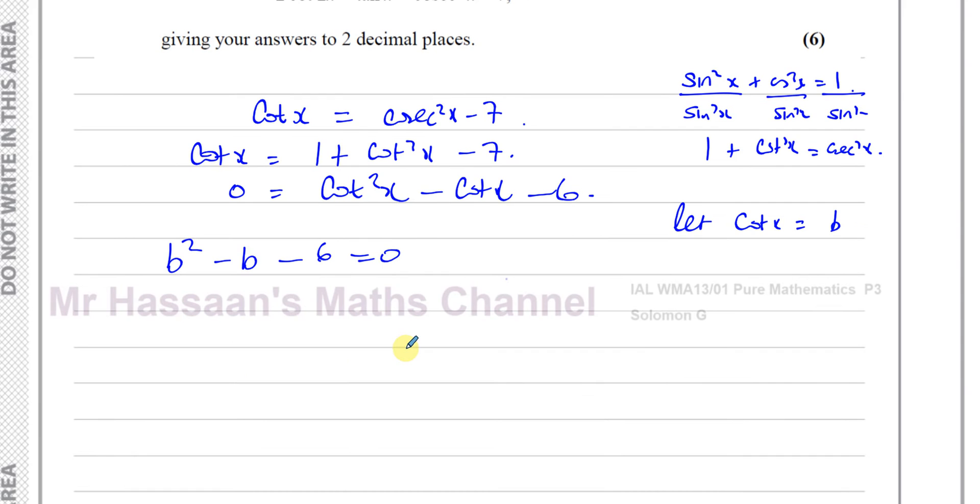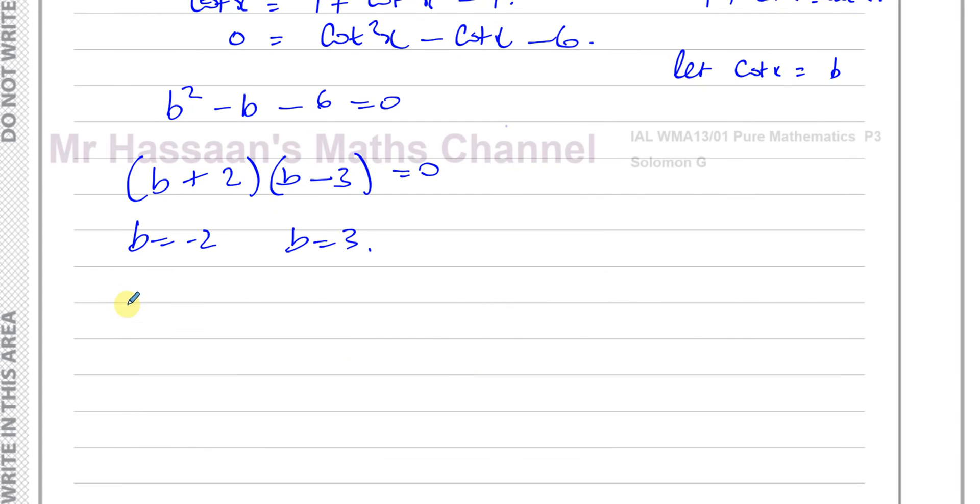I can find by factorizing, and it looks like this does factorize. I'll have b times b, 1 plus, 1 minus, then multiply to give you negative 6. You're going to have minus 3 and plus 2. That gives you minus 1 when you add them, and minus 6 when you multiply them, that's right. So then I can say b is equal to negative 2, and b is equal to 3. So therefore, I can say that cot x is equal to negative 2, and cot x is equal to 3.